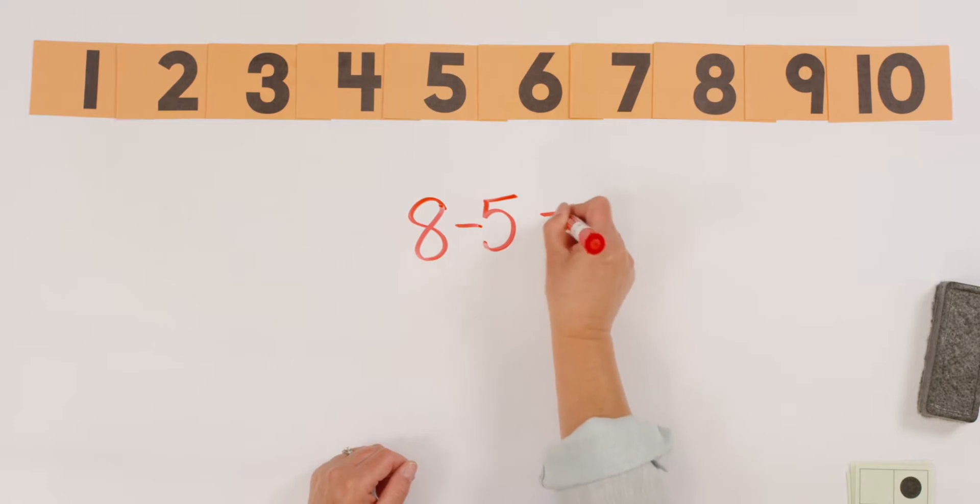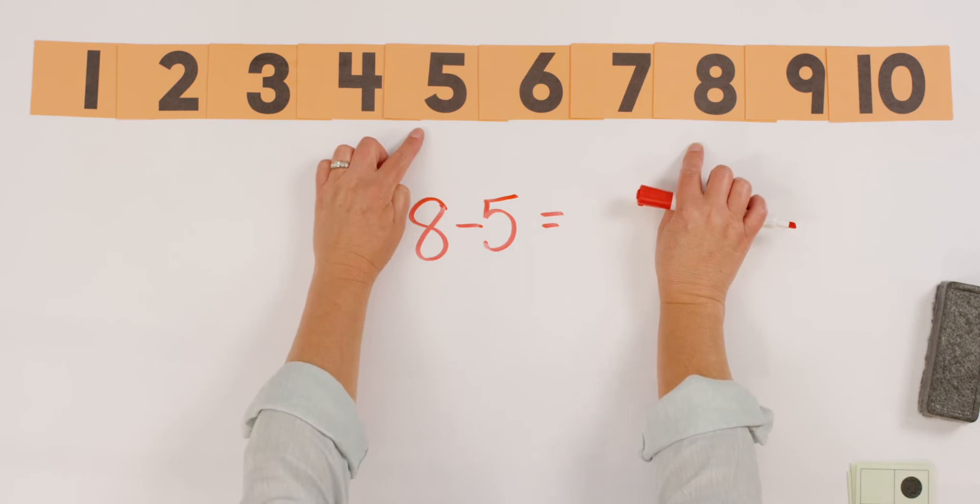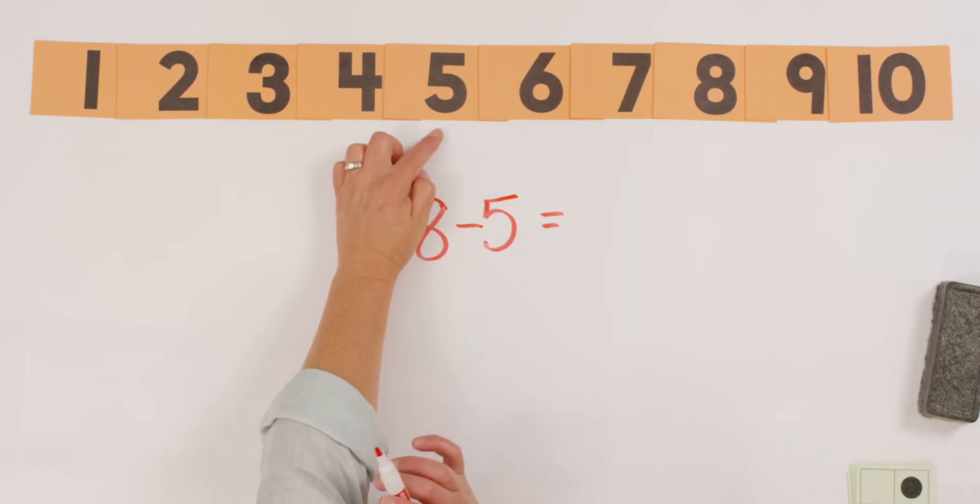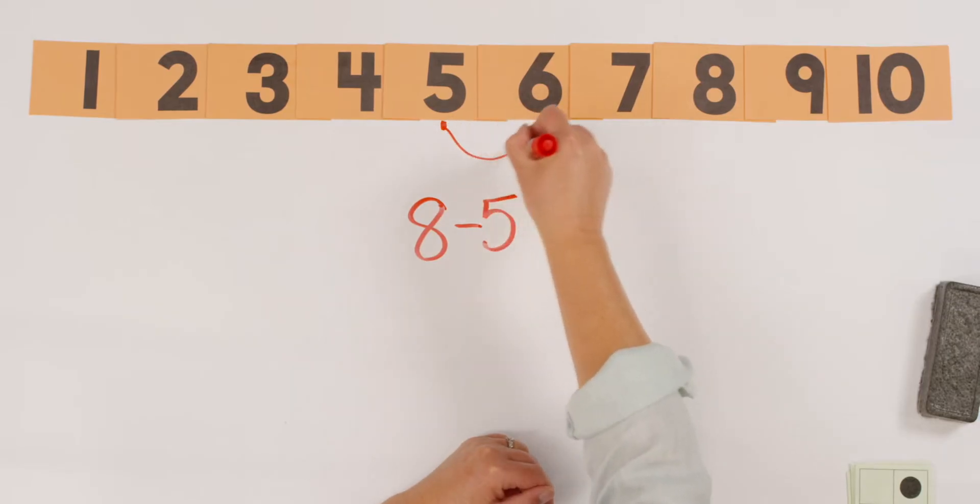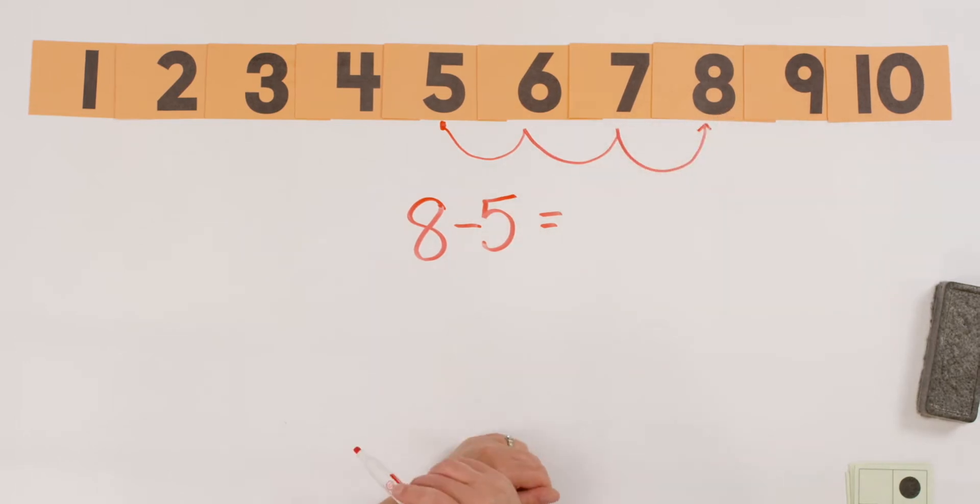8 minus 5 equals, I don't know. Let's find these two numbers on our number line. There's 8 and there's 5. They look pretty close together, so let's practice counting on to get to 8. So let's start with 5 in our head and let's count on to see how much more it takes to get to 8. So I'm going to mark 5, put 5 in your head, and let's count on: 6, 7, 8.